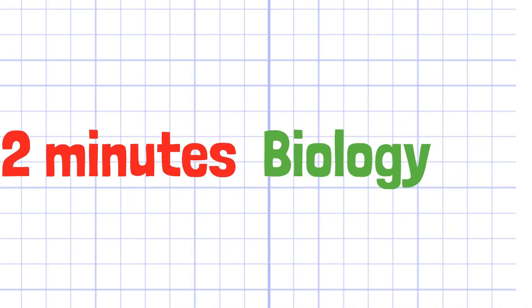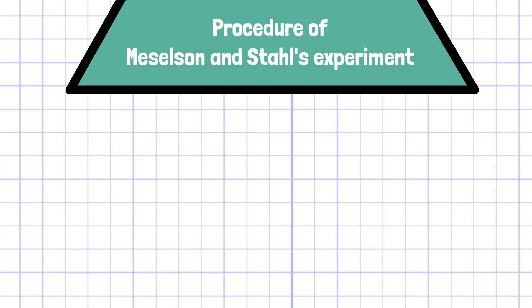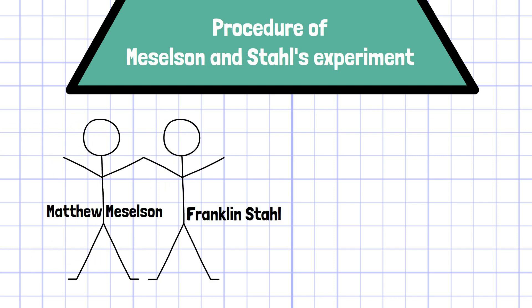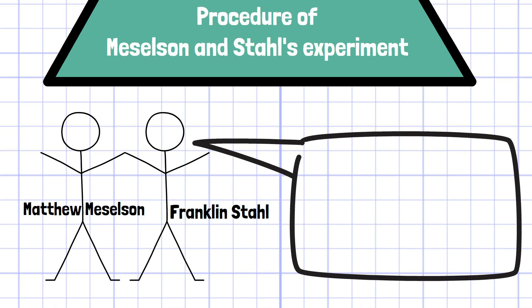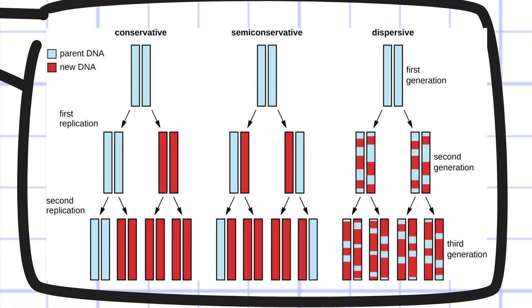Welcome to 2 Minute Bio. In this video, we'll discuss the procedure of Meselson-Stahl's experiment. As I mentioned in the last couple of videos, the purpose of Meselson-Stahl's experiment was to prove that the DNA replication mechanism is performed semi-conservatively. The procedure of the experiment is as follows.